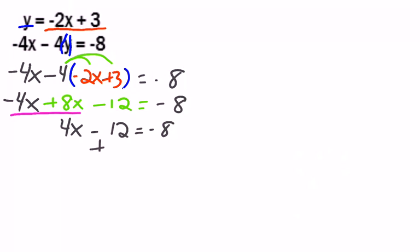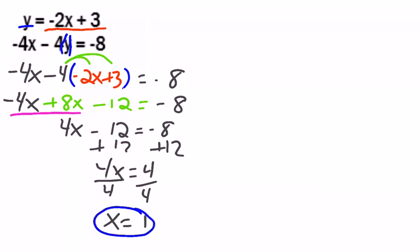Now we got a two-stepper. Add 12. So 4x equals 4. And last step is to divide by 4. So I get that x equals 4 divided by 4 is 1. x equals 1.